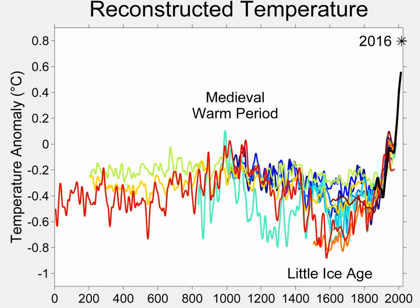Since there are few instrumental records before 1850, temperatures before then must be reconstructed based on proxy methods. One such method, based on principles of dendroclimatology, uses the width and other characteristics of tree rings to infer temperature.